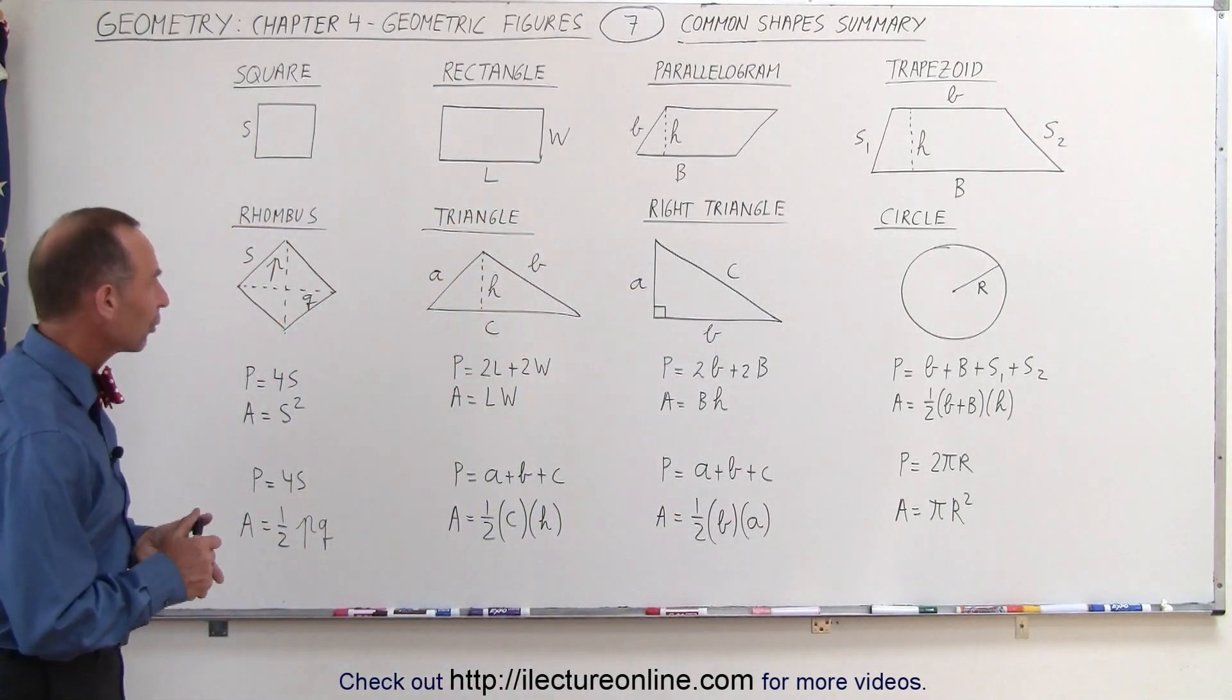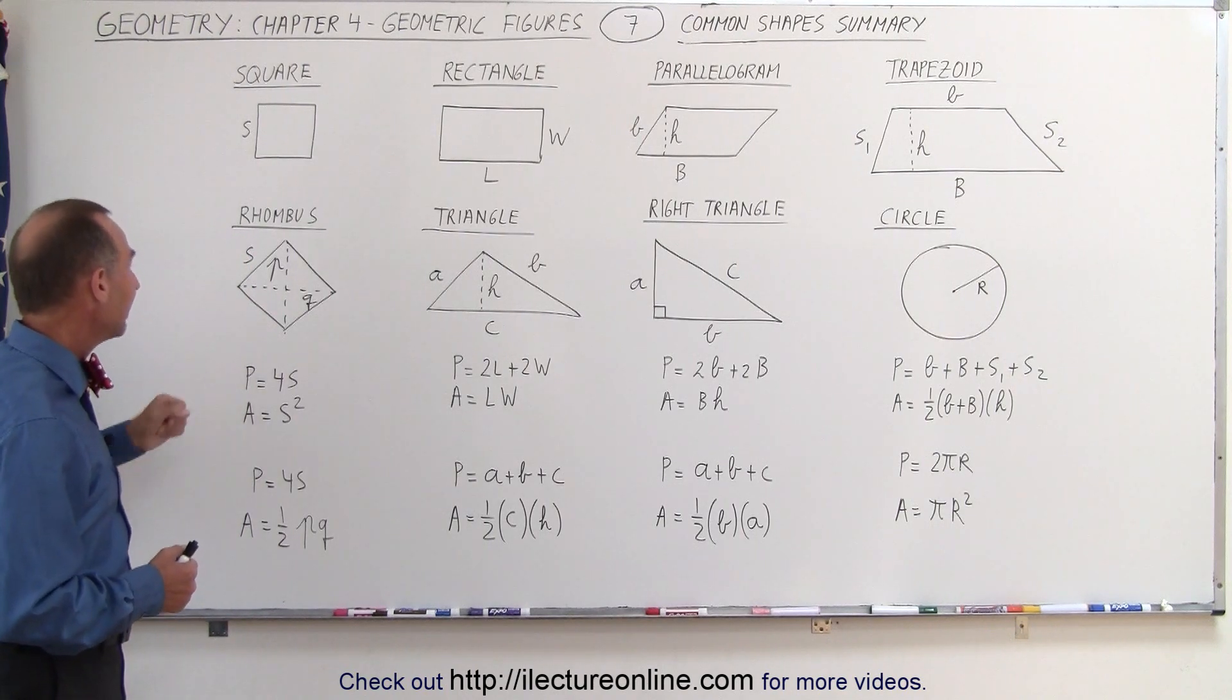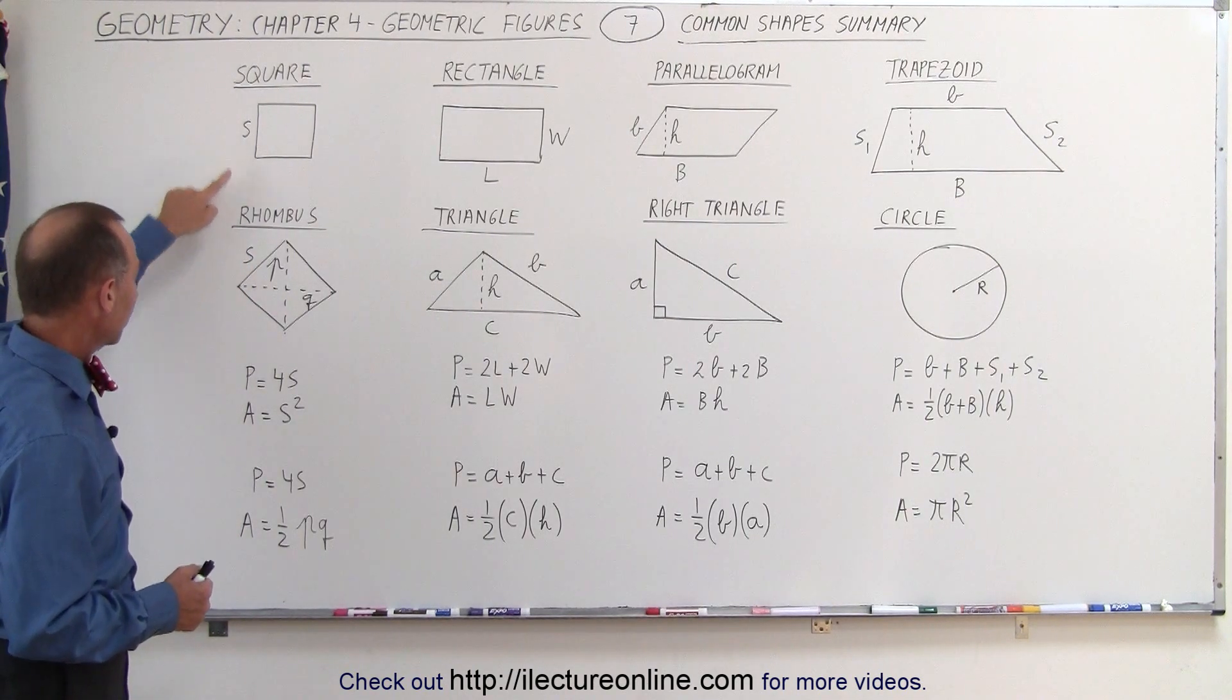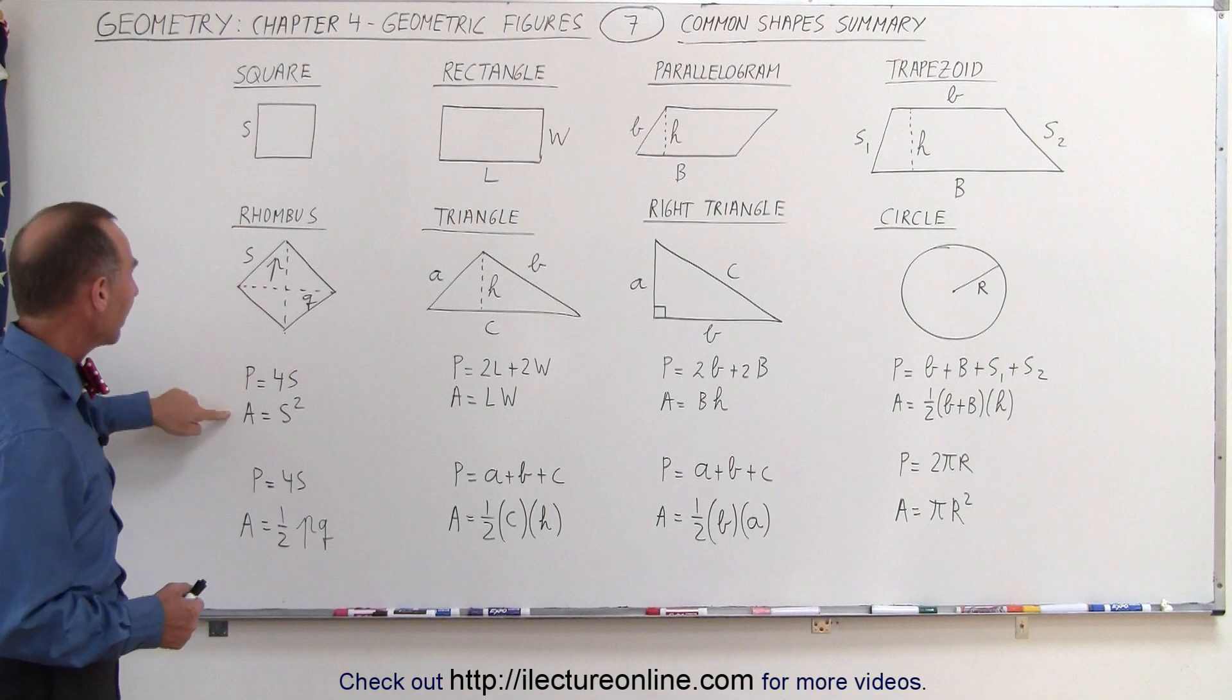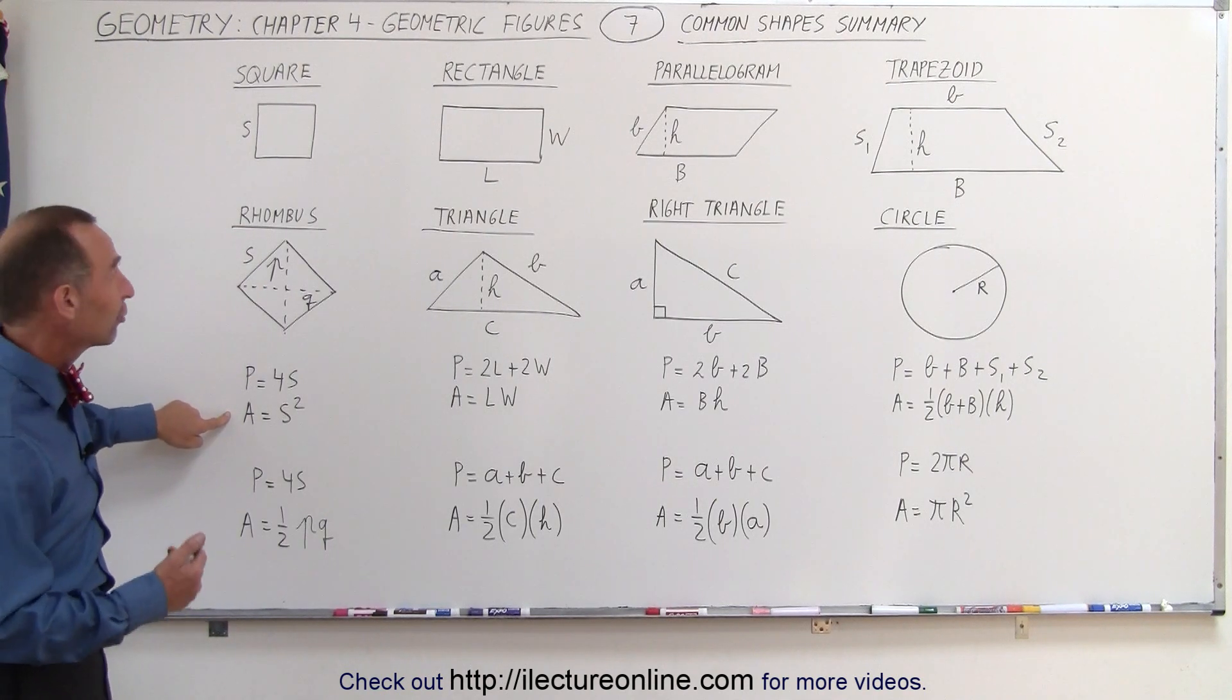Now in each case we're going to show the equation for the perimeter and the area. For the square, the perimeter is four times the side and the area is the side squared.